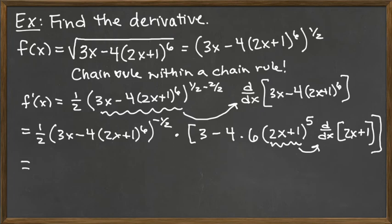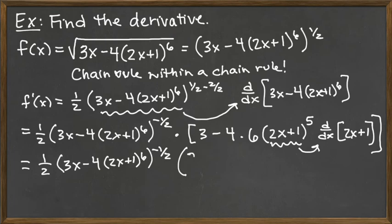Our derivative at this point is 1 half times the long set of parentheses to the negative 1 half. And then what we have multiplied by is a 3 minus our 4 times 6 would be 24. And then we have the 2x plus 1 to the 5th. And then we need to multiply it by the derivative of 2x plus 1. So that derivative is the derivative of 2x, which is just 2, plus the derivative of 1 would be 0. So that would complete our final derivative.